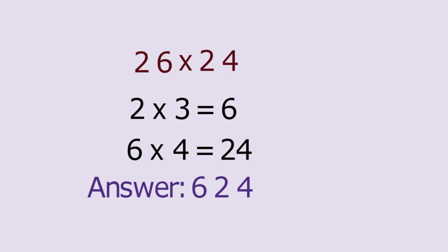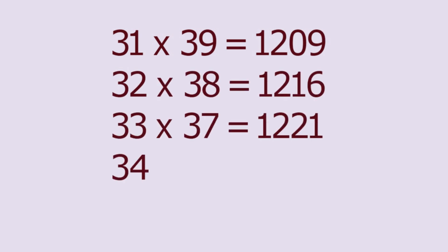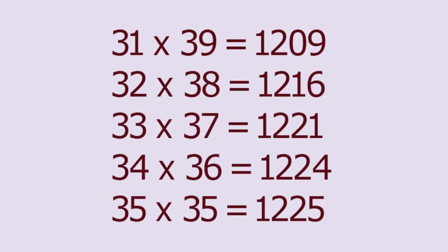Thus, we can use this method to instantly determine that 31 x 39 is equal to 1209, 32 x 38, 33 x 37, 34 x 36, 35 x 35. Now, consider 31 x 39, 3 x 4 is equal to 12 and 1 x 9 is 09. Also consider 32 x 38, 3 x 4 is 12 and 2 x 8 is 16 and so on so forth.